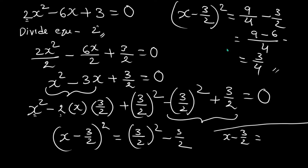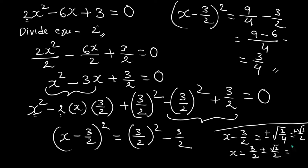Taking x minus 3/2 to the other side, we get plus or minus square root of 3 over 4. The square root of 3 over 4 is root 3 over 2, so x equals 3 over 2 plus or minus root 3 over 2, which gives us 3 plus or minus root 3, all divided by 2. The two roots are (3 plus root 3) over 2 and (3 minus root 3) over 2 — we found the roots without any formula.